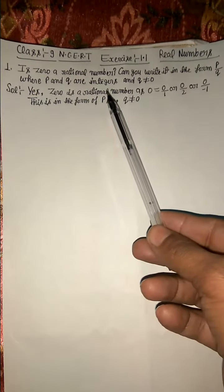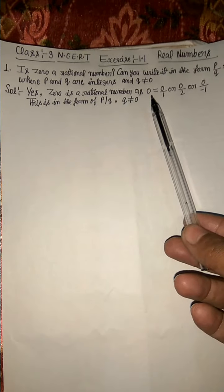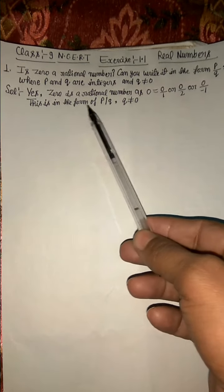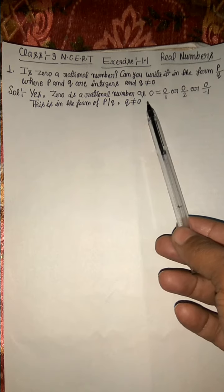So we can say yes, 0 is a rational number and we can write 0 in the form of 0 upon 1 or 0 upon 2 or 0 upon minus 1. This is in the form of P upon Q where Q does not equal to 0.